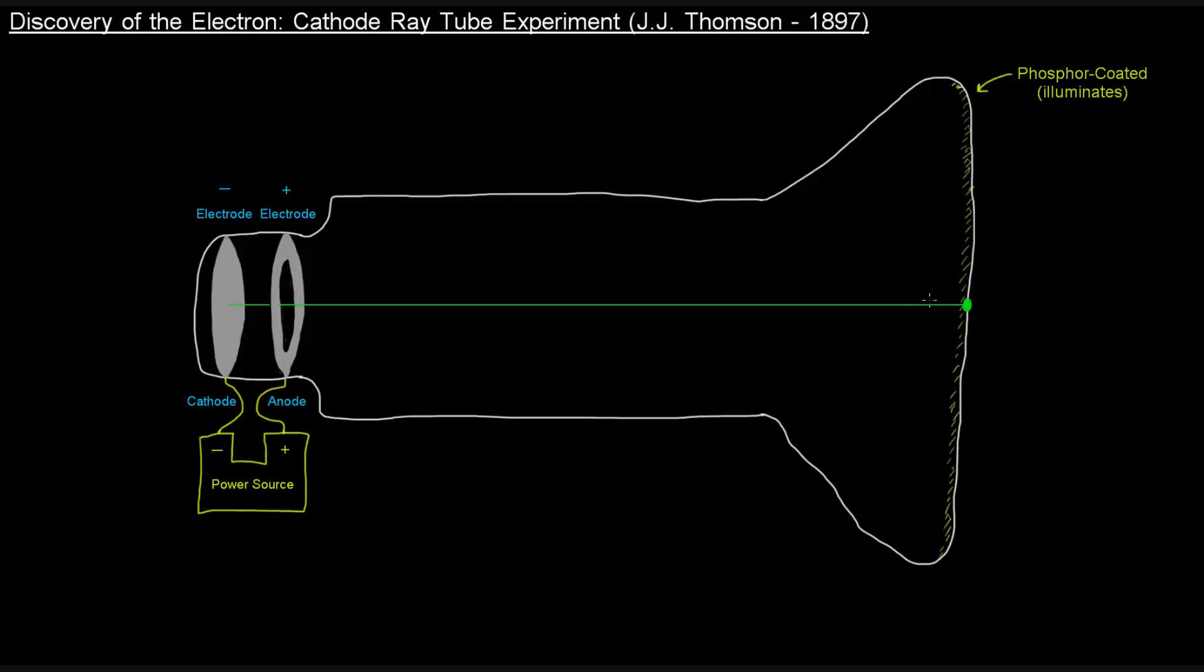So Thompson sees this and he thinks, what is this ray made up of, what is this beam made up of, and he thinks and wonders, does this thing have a charge of some sort, an electrical charge?